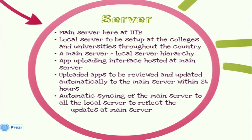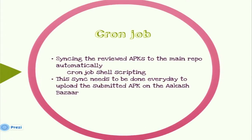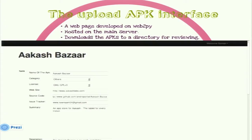Automatic syncing is available: the main server is synced to all local servers once a day, after every 24 hours. The F-Droid system provided good commands and server tools for setting up the server, which will also be configured at all local colleges. A cron job runs in the background using shell scripting to sync uploaded APKs into the repository of the main server, from where they are reflected to all local servers. The uploading interface is also hosted on the main server so that all uploaded APKs go there first and are then synced.